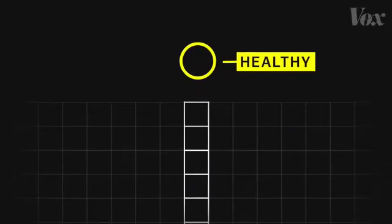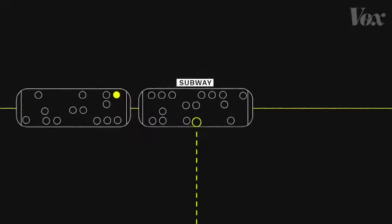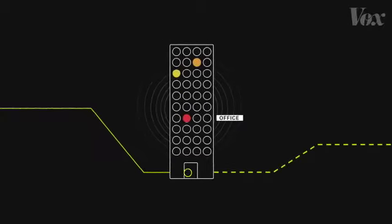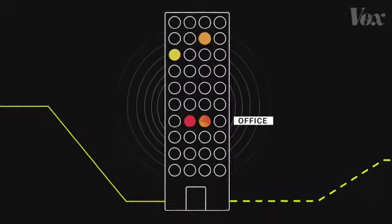And this dot represents one person who's healthy and decides to go out like usual. They jump on the subway and head into the office where they catch COVID-19.